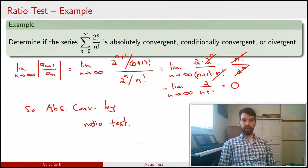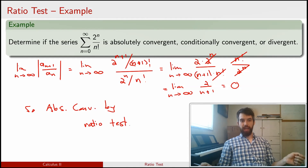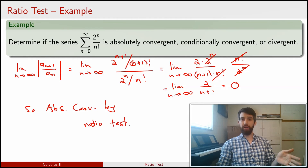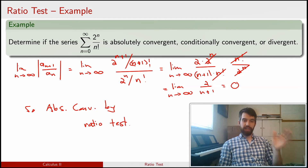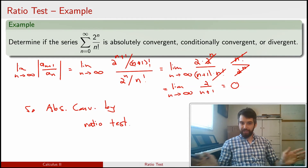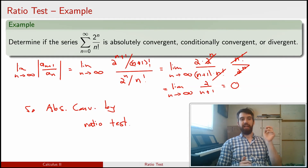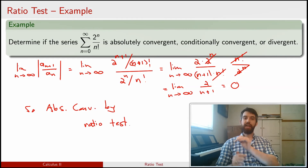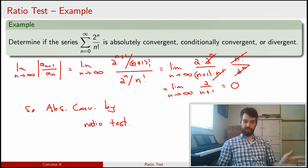One way to think about this: 2^n grows very quickly as n gets large, and n factorial also grows very quickly. We didn't know which would dominate. What we learn here is that n factorial dominates 2^n — it grows far faster. In fact, it grows so fast that not only does the sequence go to 0, but the series sums to a finite number and converges absolutely.